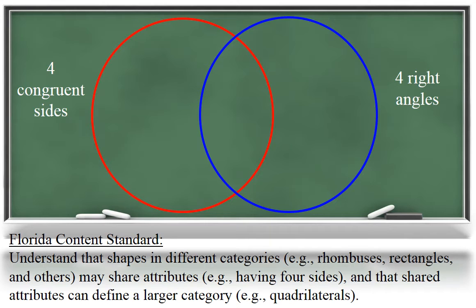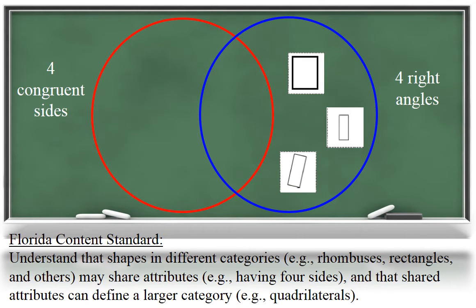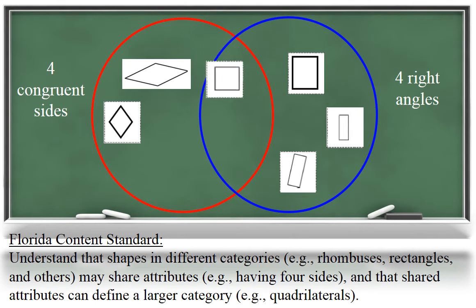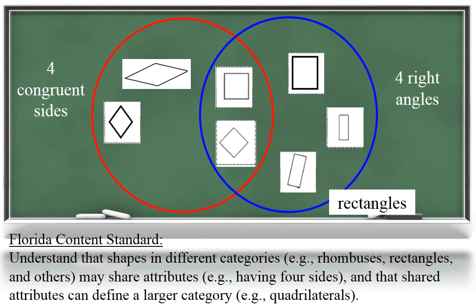One way your child will explore this concept is through the use of a Venn diagram. With this Venn diagram, all shapes in the blue circle share the same attributes: four right angles. Shapes in the red circle share the same attributes: four congruent sides. And shapes in the common area have attributes of both circles. All shapes in the blue circle can be named rectangles, while all shapes in the red circle can be named rhombuses or rhombi.